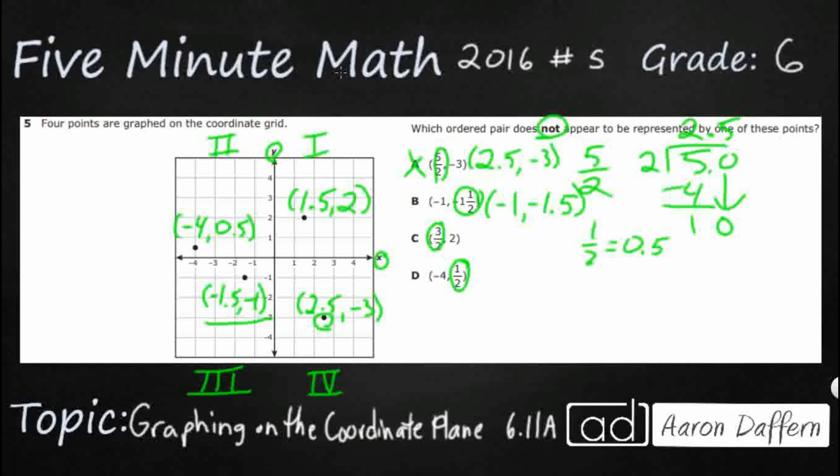C, two goes into three once with one left over. So that's going to be 1.5 comma two. So three halves is one and a half, which is 1.5. And we see that right here. So that's not the answer.